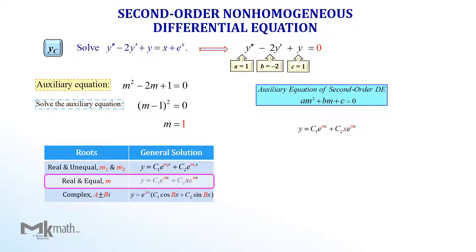Since m equals 1, substituting 1 into the solution gives Yc equals C₁·e^x plus C₂·x·e^x, where C₁ and C₂ are arbitrary constants. So we have found the solution for the Yc part.